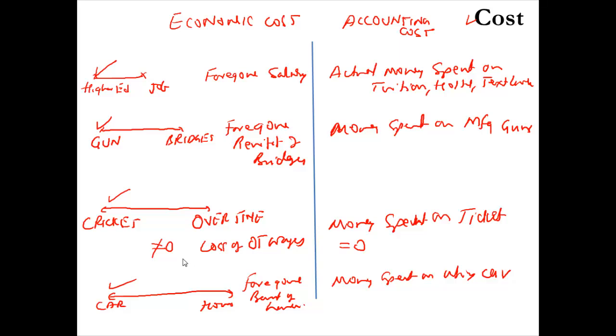If you look at left-hand side and the right-hand side, the left-hand side is what we call opportunity cost. It is defined as the benefit from the next best alternative, which is foregone. Accounting cost is the actual dollar or rupee amount spent.